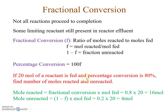For example, if 20 moles of a reactant is fed and percentage conversion is 80%, then the fractional conversion is 0.8, so moles reacted will be 0.8 times 20, that is 16 moles. Moles unreacted will be the fraction unreacted multiplied by the moles fed. This was a simple problem we took last time.